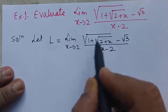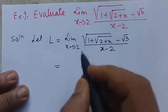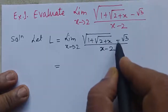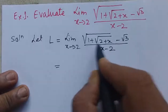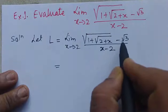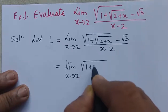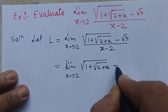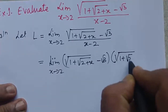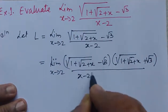Let the given limit be L. Since the numerator is an irrational number, we multiply and divide by its rationalizing factor. The rationalizing factor is square root of (1 plus square root of (2 plus x)) plus root 3. So we multiply the numerator and denominator by this factor.